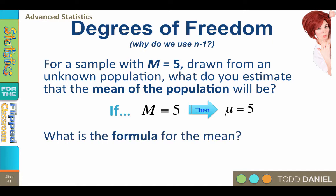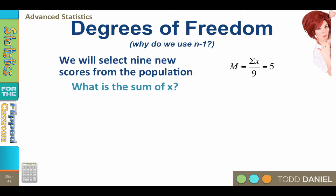So what is the formula for the mean? The mean is the sum of x divided by n, which we estimate must equal 5. So we are now going to select nine new scores from this population with an estimated mean of 5. The sum of x divided by 9 equals 5. So what is the sum of x?